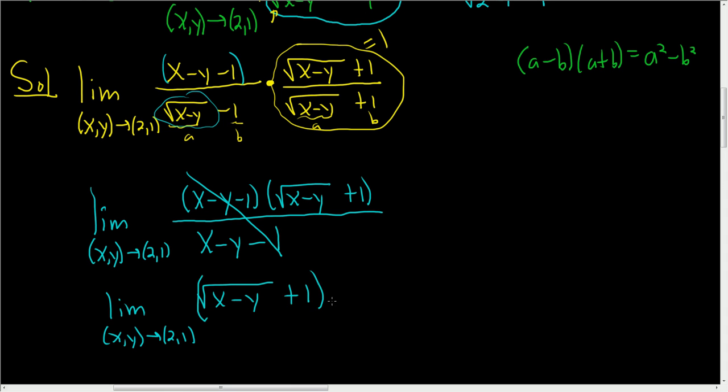And at this point it looks like we can go ahead and just plug in the numbers. So if we plug in x equals 2, we get the square root of 2. Plugging in y equals 1, we get minus 1. And then here we get a plus 1.